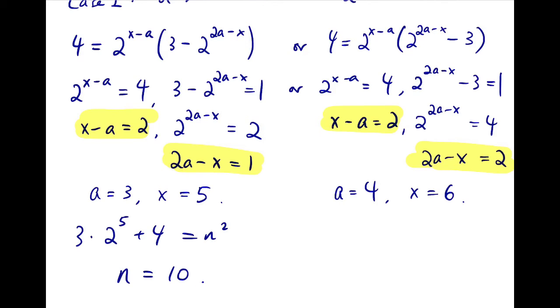Again, we put x equals 6 into the original equation. So 3 times 2 to the 6 plus 4 is n squared. The left hand side is 196, so n is 14. Now that's the first case.